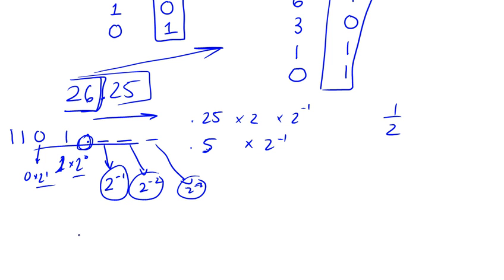Just as in decimal, where, for example, if we had 10.74, this is basically 7 times 10 to the minus 1. This is 4 times 10 to the minus 2.